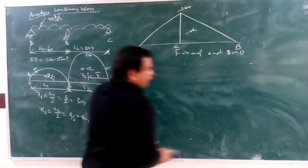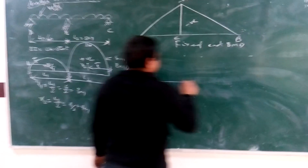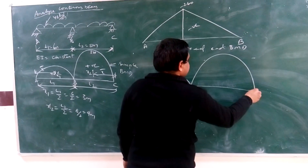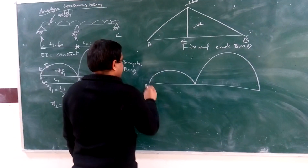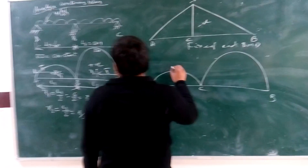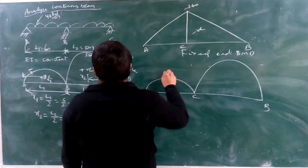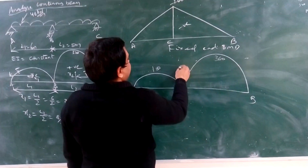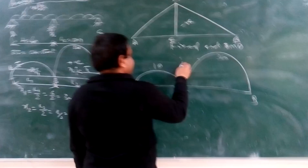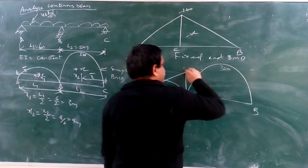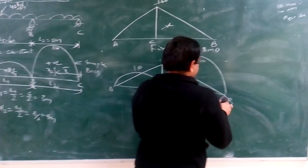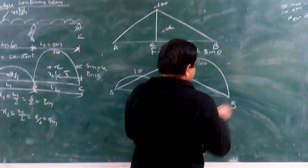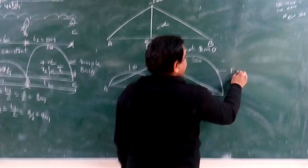We superimpose the free bending moment and the fixed-end bending moment diagrams. The combined bending moment diagram has values of 180 for span AB, 320 for span BC, and 260 at support B. This gives us the final combined bending moment diagram for the continuous beam.